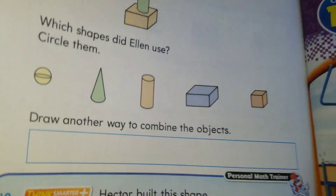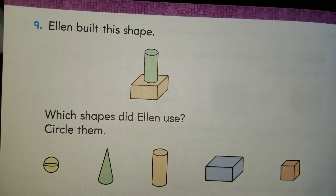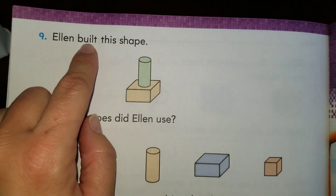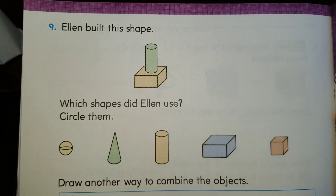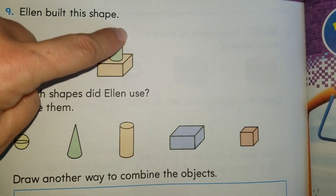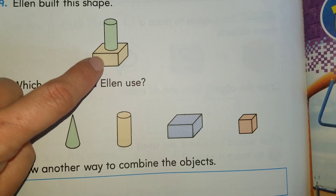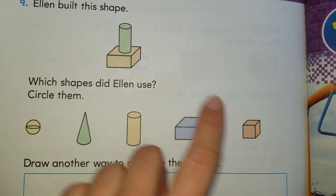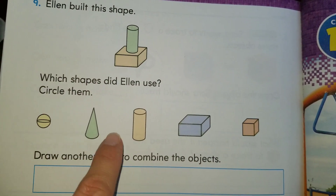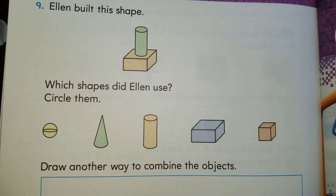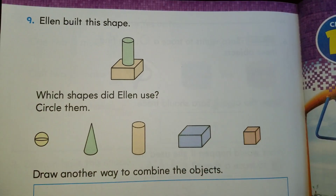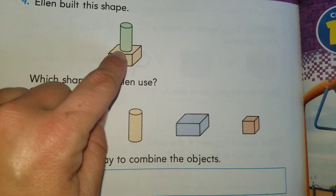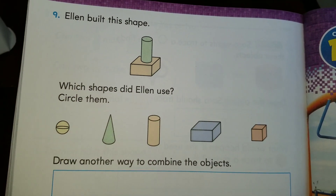Alright boys and girls, we're ready now to move to our very last page. Yay, we're almost done for this week! Ellen built this shape — which shapes did Ellen use? Circle them. There is a cylinder here and there is a rectangular prism. Can you circle the shapes that you see on top? Can you circle them at the bottom? If you can find the cylinder, you're going to circle the cylinder. Which one is the rectangular prism? You're going to circle the rectangular prism.